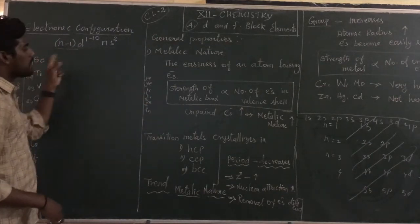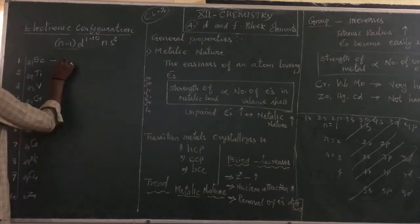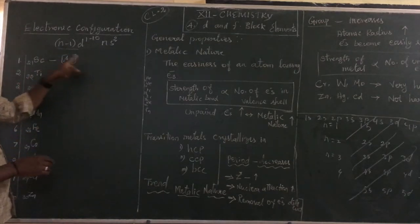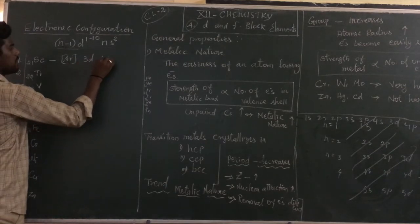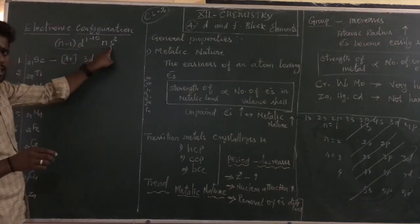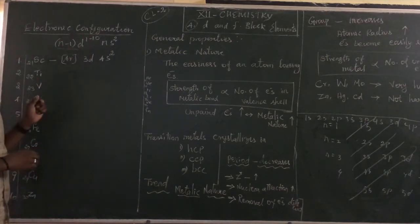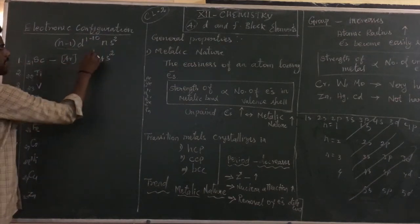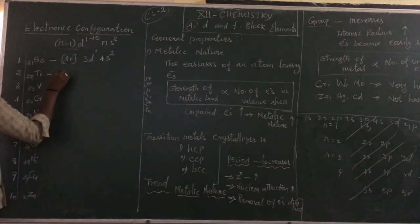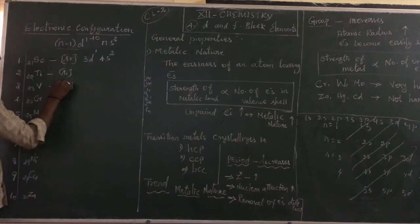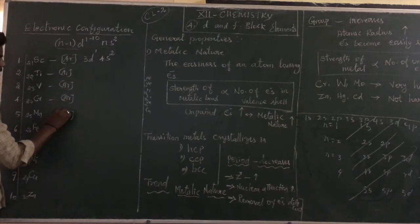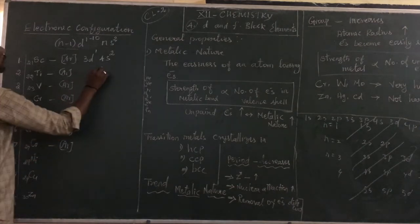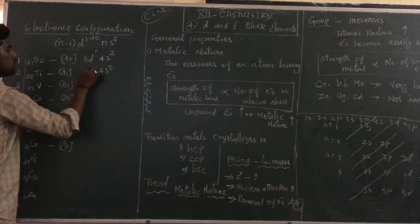The nearest noble gas to element 21 (scandium) is argon. So argon is written as the core. For scandium: [Ar] 3d¹ 4s². For titanium: [Ar] 3d² 4s². For vanadium: [Ar] 3d³ 4s². The expected configuration for chromium would be [Ar] 3d⁴ 4s².